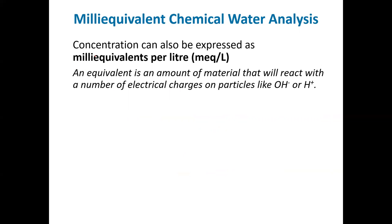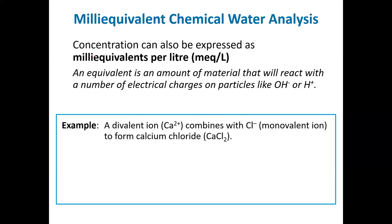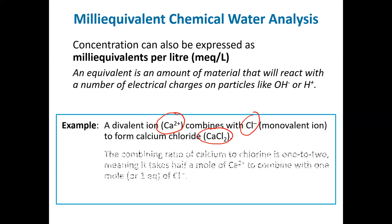Now something a little harder to think about but really important for water quality: milliequivalents. It's a bit old school but still used in water quality and the pharmaceutical industry. The idea behind milliequivalents is thinking about how much something will react. Calcium has a charge of 2+, so it reacts twice with an ion like chloride, which has one negative charge, giving calcium chloride. If an ion has a charge of +1 or -1, the answer is one and the math is simple. Calcium reacts twice.